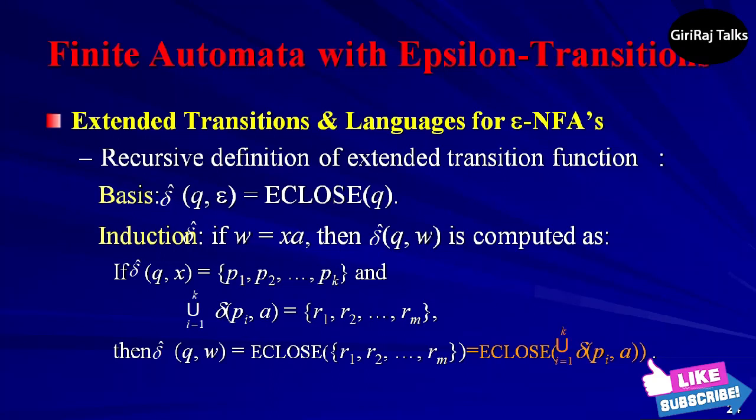The appropriate recursive definition of δ̂ is: let us take first the basis: δ̂(q, ε) = ECLOSE(q). That is, if the label of the path is epsilon, then we can follow only epsilon-labeled arcs extending from state q. That is exactly what ECLOSE does.